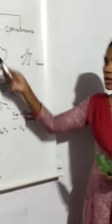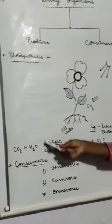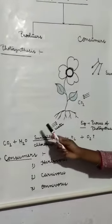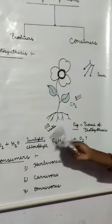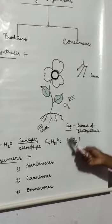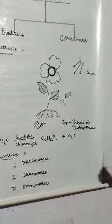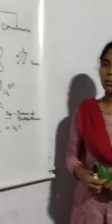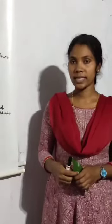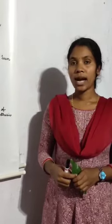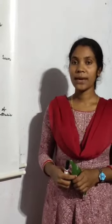Photosynthesis can be shown in the form of a chemical equation. That is, carbon dioxide plus water in the presence of sunlight and chlorophyll gives glucose plus oxygen. This way, plants make their own food by the process called photosynthesis. They use this food for their growth and the extra food they store in the form of fruits and vegetables.